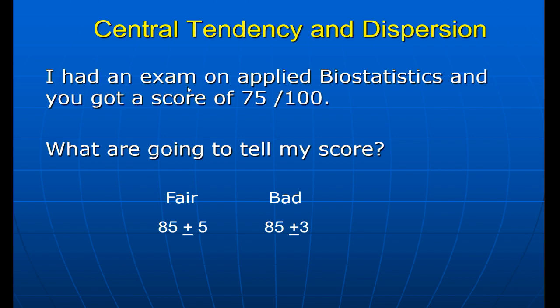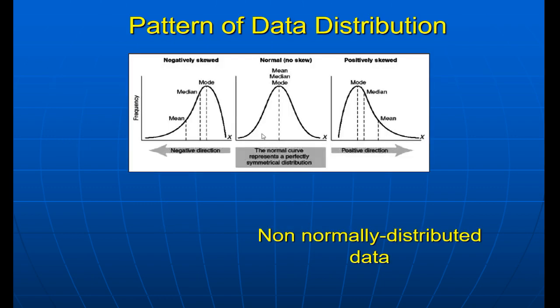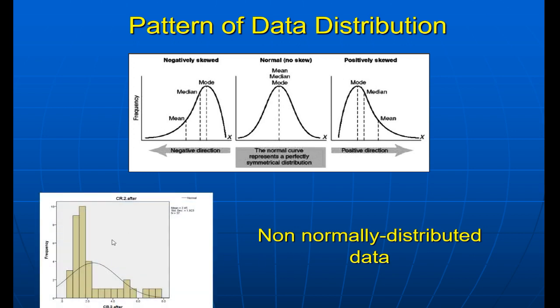You cannot answer this question without the mean and the standard deviation. This is the pattern of data distribution: normal distributed data, negatively skewed, and positively skewed. Those are named non-normally distributed data. This creatinine example from my database is non-normally distributed data, expressed with median and range — that will be the next lecture. But normal distributed data is more common in our datasets than abnormal distributed data. Thanks, and I hope you got an idea about the standard deviation. See you in the next lecture about non-normally distributed data.